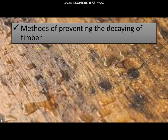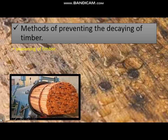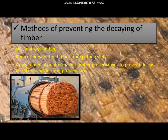Methods of preventing the decaying of timber: seasoning of timber, keeping or preventing the timber from getting wet, and applying medial or aftermarket timber preservatives to prevent decaying or kill existing decaying problem areas.